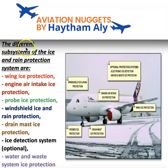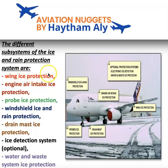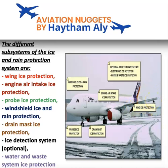The different subsystems of the ice and rain protection system include wing ice protection. Wing ice protection uses hot bleed air from the bleed system to heat the three outboard slats and prevent ice build-up on them. Hot bleed air reaches the three outboard slats through a wing anti-ice valve — each wing has its own wing anti-ice valve, called a pressure regulation and shutoff valve.